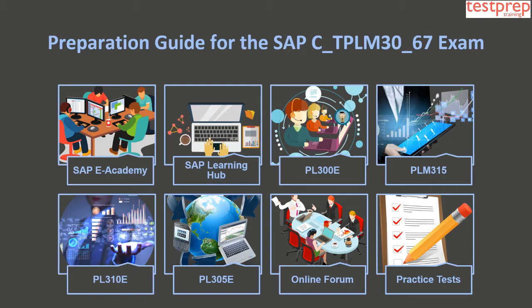Learning Resource 3 is PL300D, which covers Maintenance and Repair Business Processes for SAP EAM. It is mandatory to have fundamental knowledge for the exam. At the end of this course, you will learn skills like corrective maintenance and technical objects.